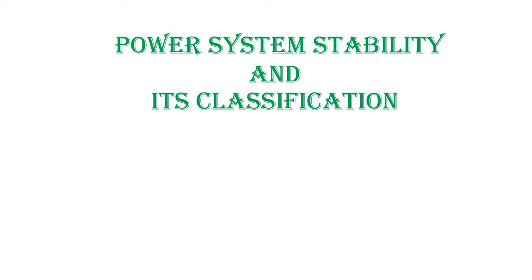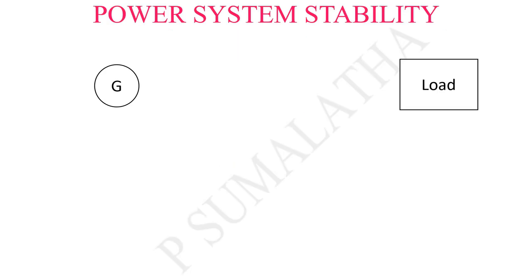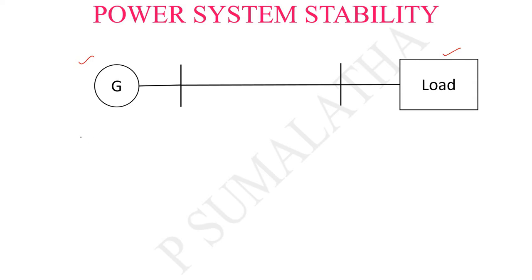Hello everyone, I welcome you all for today's session on power system stability and its classification. First let us try to understand what is meant by power system stability. For this I have taken a very simple system where we have a single generator and single load. The power will be transferred from the generator to the load through the transmission line. The system is said to be under balanced condition whenever the generation is equal to the load.